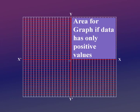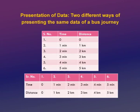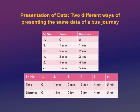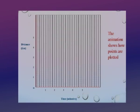Now we are ready to draw a graph. We choose the area of the graph — since all values are positive, we choose this area for drawing. This is a sample of graph paper. In this column we have time, in this column we have distance. Here in this row we have time and in this row we have distance. It does not matter which way you prefer — you can represent the data either way.